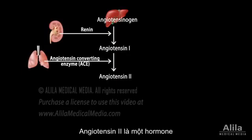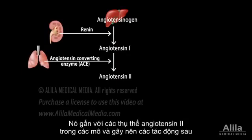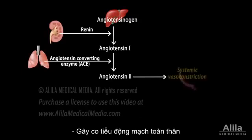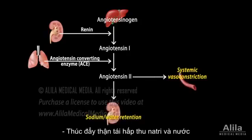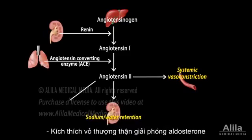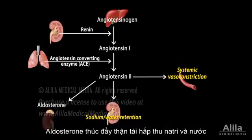Angiotensin 2 is a hormone. It binds to angiotensin 2 receptors in tissues to exert various effects. It stimulates vasoconstriction in systemic arterioles. It promotes sodium reabsorption in proximal convoluted tubules of the kidneys. It induces the release of aldosterone from the adrenal cortex. Aldosterone promotes sodium and water retention in the kidneys.